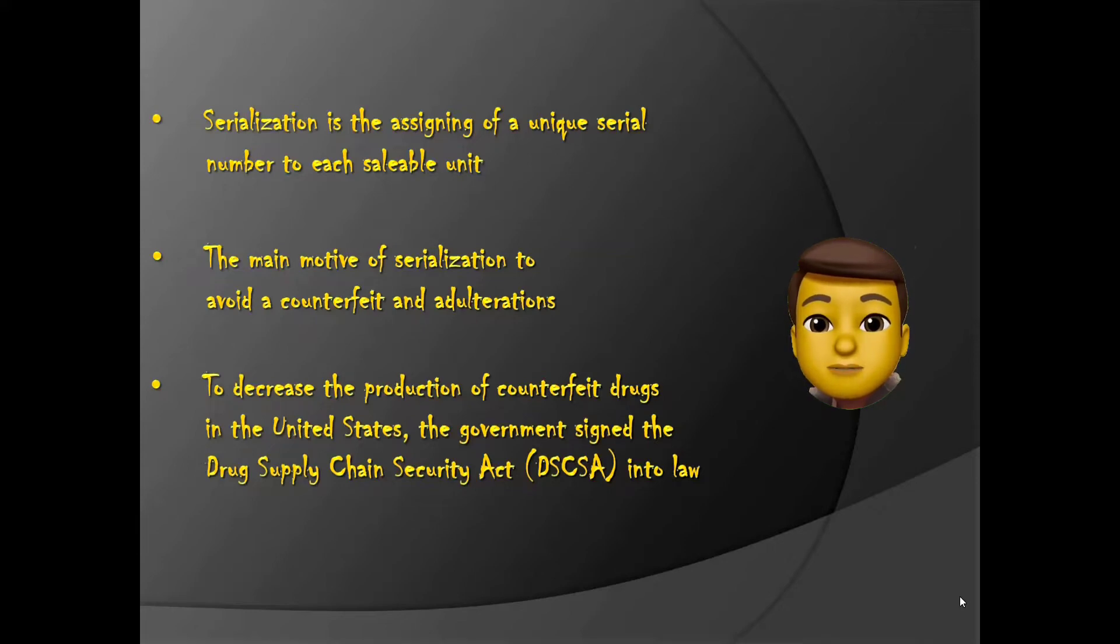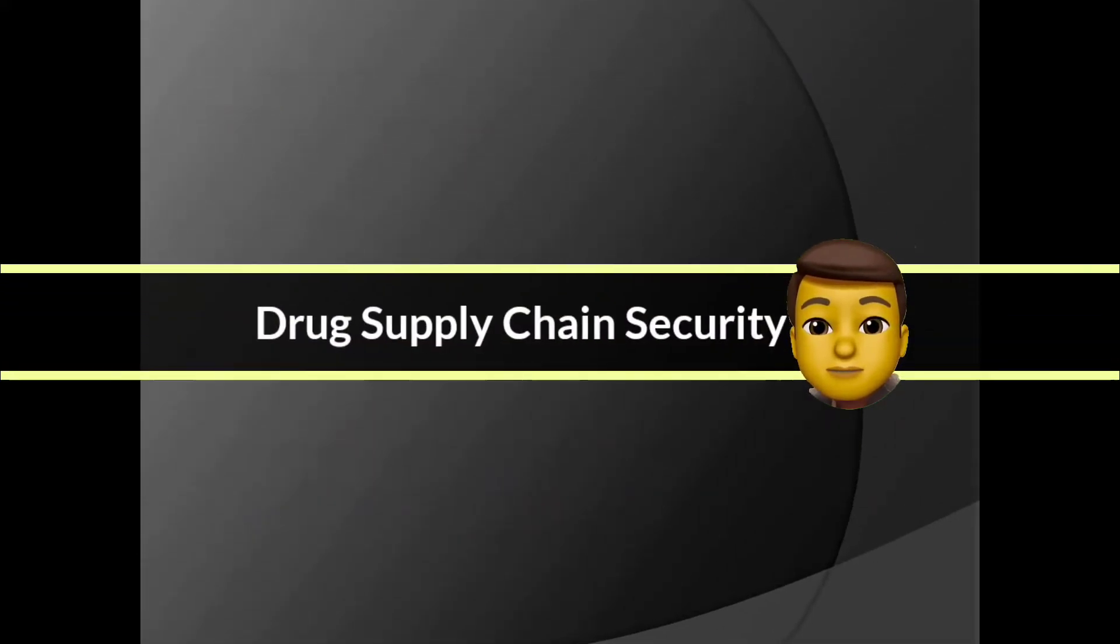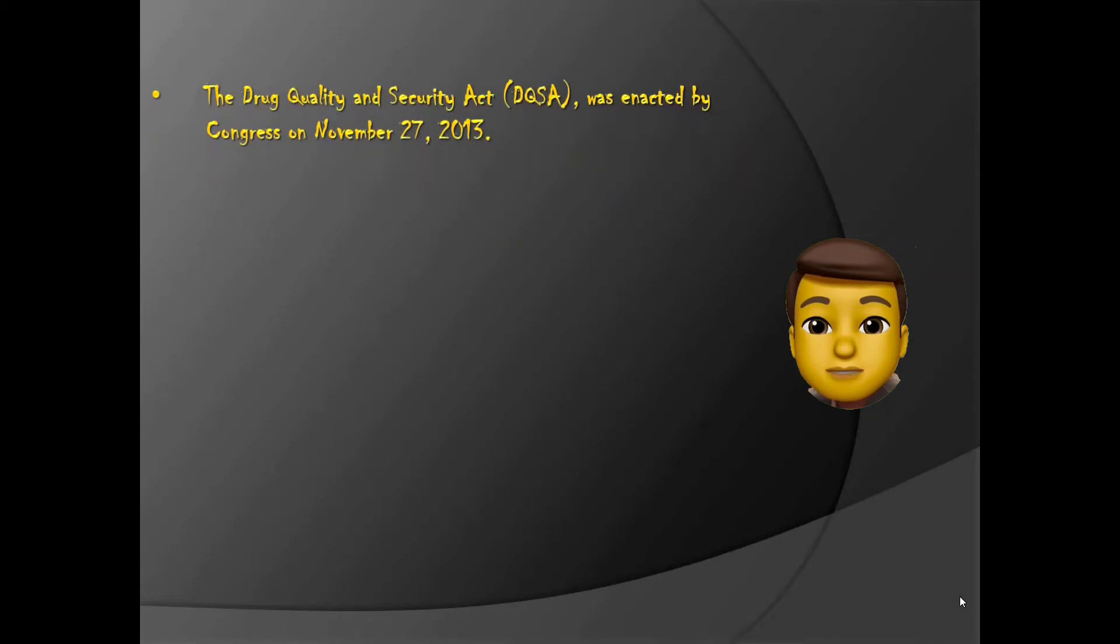Next, the Drug Supply Chain Security Act. This was first named the Drug Quality and Security Act and was enacted by Congress on November 27, 2013.